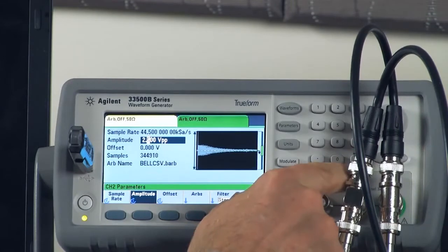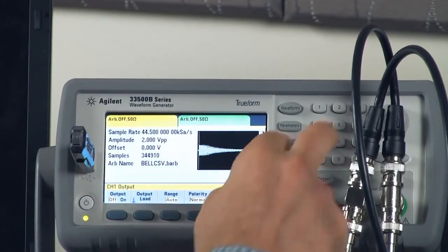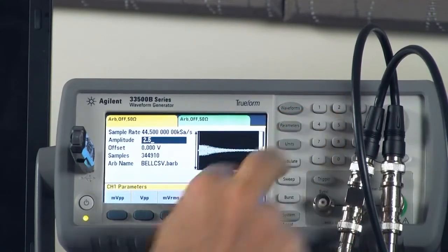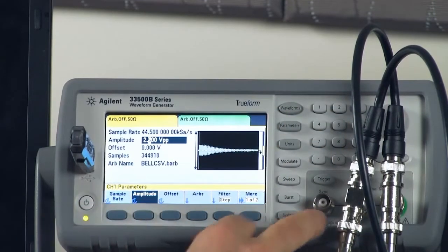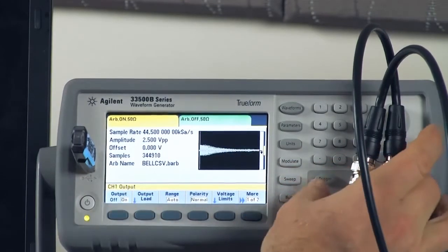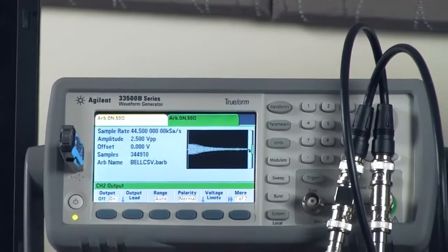Now I'm going to go over to channel two and make the same changes. Change the amplitude to 2.5 volts, and now I'm going to turn on the outputs. Turn on channel one, turn on channel two.